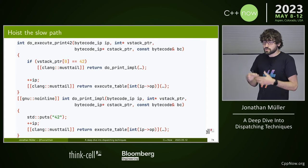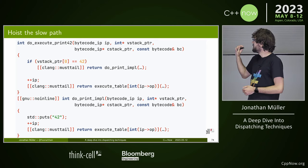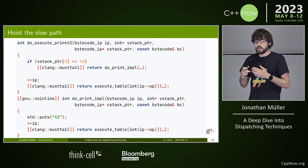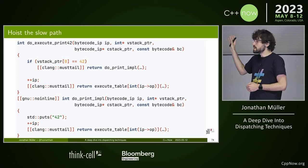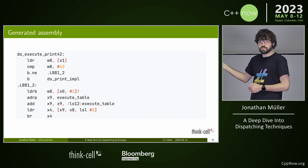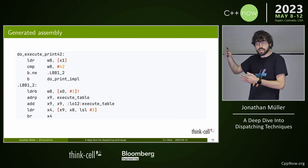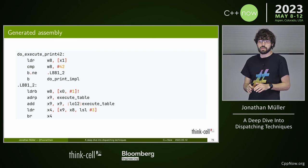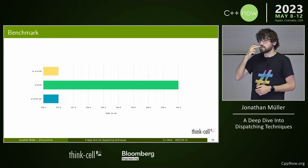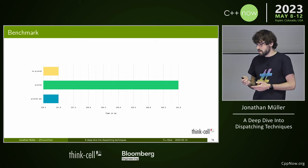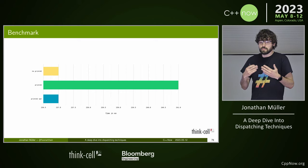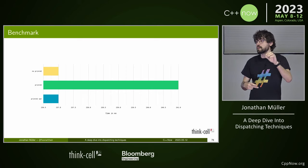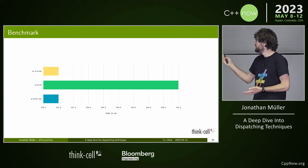The fix: instead of calling puts directly, we tail-call a separate function that does the printing. If the top value is 42, we tail-call that other function; it prints 42 and then continues executing. The execute_print42 function itself has no function calls — only a tail call to another function. So its assembly is minimal: compare against 42, if so jump to the tail call to print_input, otherwise continue. All the register shuffling lives in print_input, which only executes on the slow path. This completely eliminates the overhead in the fast path and restores performance.